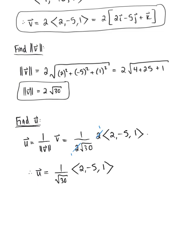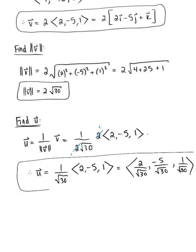You could, of course, distribute that square root through if you'd like, and rewrite your final answer as 2 over √30, negative 5 over √30, 1 over √30. Either form of this answer is beautiful.